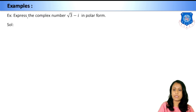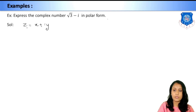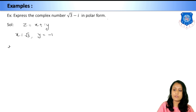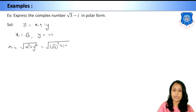Example 1: Express the complex number √3 − i in polar form. Comparing with x + iy, we get x = √3 and y = −1. First find r: r = √(x² + y²) = √((√3)² + (−1)²) = √(3 + 1) = √4 = 2.